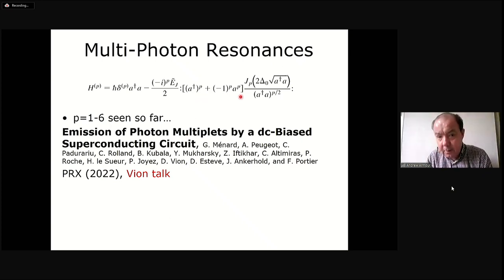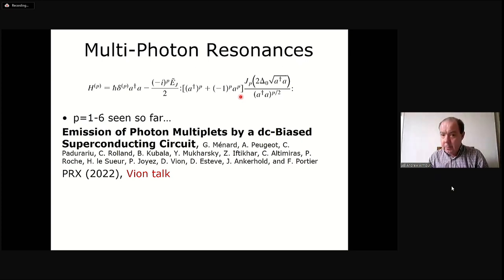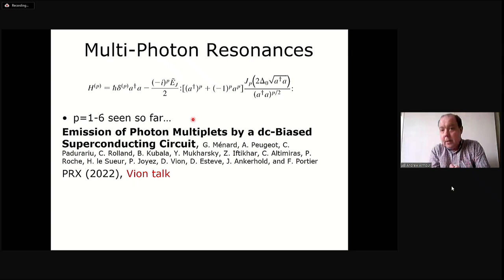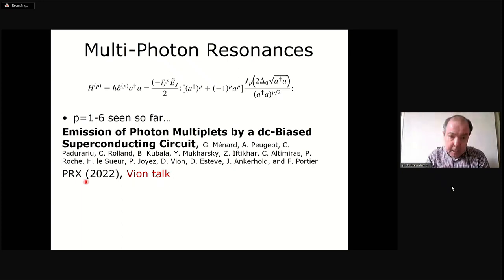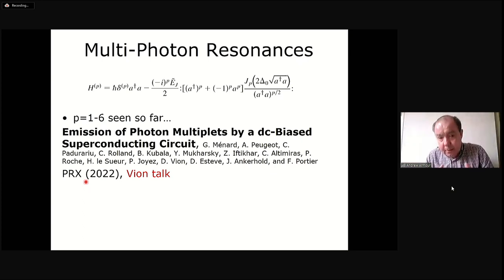Processes where single or two photons are created occur across a wide area of physics, and quantum optics textbooks are full of these. But processes where six photons are created are really quite hard to find. It's really exciting, as we heard on Wednesday, that you can actually get this to work and generate packets of up to six photons at a time, as the Sackley group did in collaboration with the Orm group in their recent paper. It's a novel and really exciting thing to be doing.